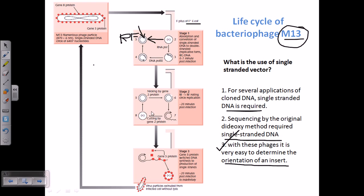In rolling circle mode, it can make more and more copies of double-stranded DNA. This continues, making more and more copies, until the cell receives a signal from a protein called gene 5 protein. Gene 5 protein is normally expressed in a very small amount inside the cell, but sometimes the amount of expression increases. The process of double-strand synthesis is done right after infection — within about one minute — but the rolling circle mode of replication continues until 20–25 minutes post-infection. More than 25 minutes post-infection, the gene 5 protein is expressed in higher amounts inside the E. coli cell.